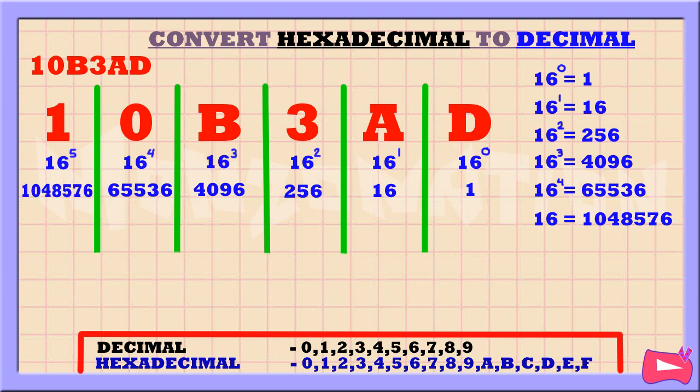Let's multiply each hexadecimal digit one by one. 1 times 1,048,576 is 1,048,576. 0 times 65,536 is 0. B times 4,096 is 45,056.